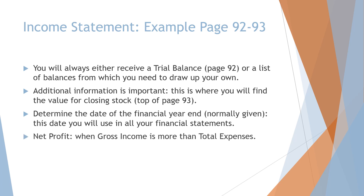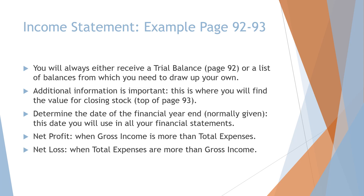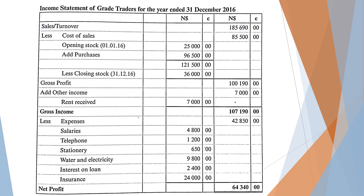Net profit is when gross income is more than the total expenses of the business, while net loss is when the total expenses are more than the gross income. I will now illustrate how the different columns in the income statement work. The first column is for details — like in the trial balance, there is no folio column. The first amount column is for sub-calculations of the totals, and the last column is for totals and main calculations. In this example, the calculation for cost of sales — opening stock plus purchases less closing stock — appears in the first column, with the answer in the last column.